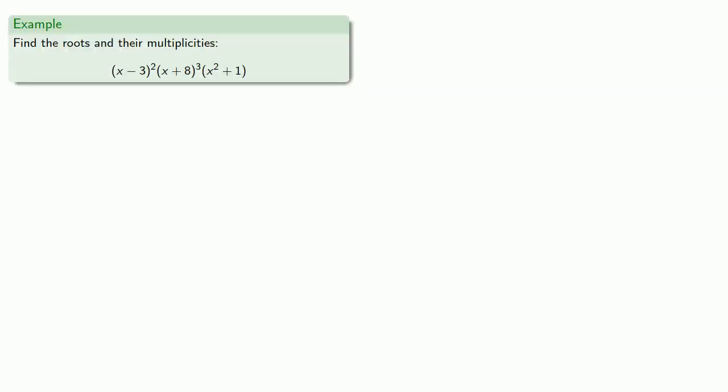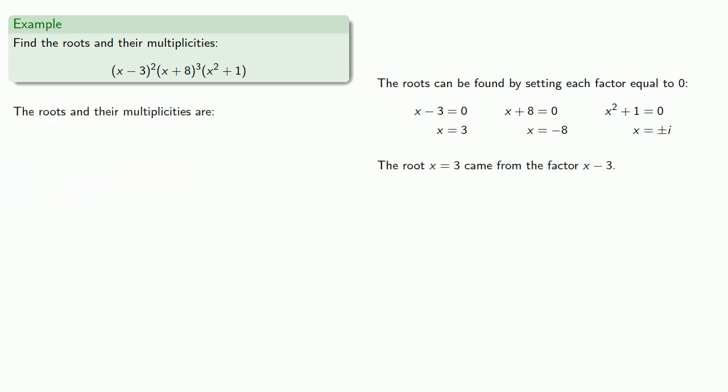For example, we might try to find the roots and their multiplicities. Remember, the roots can be found by setting each factor equal to zero and solving. So the root x equals 3 came from the factor x minus 3, and this factor appears twice, so the multiplicity is 2.